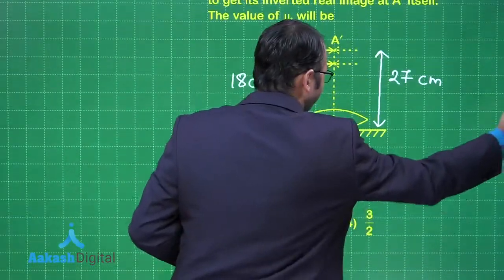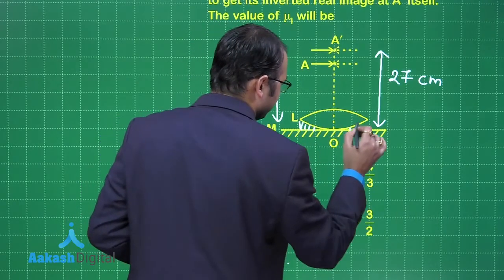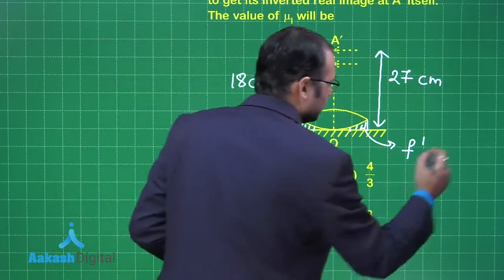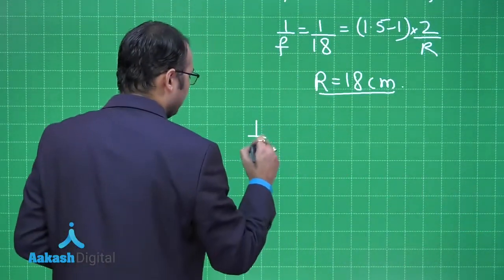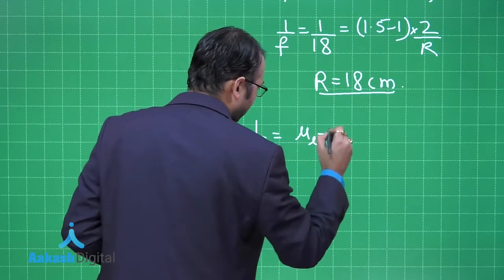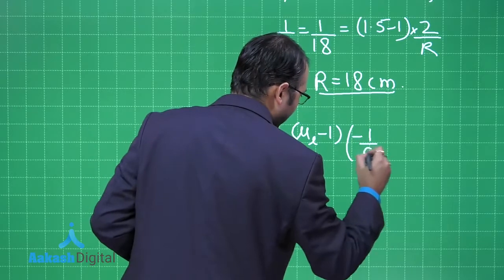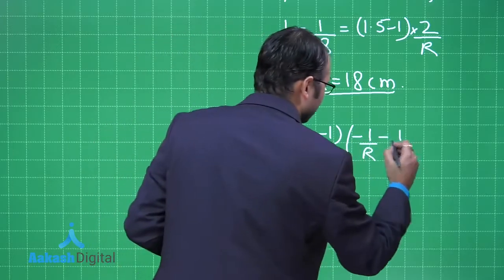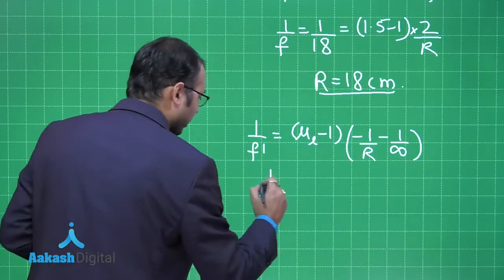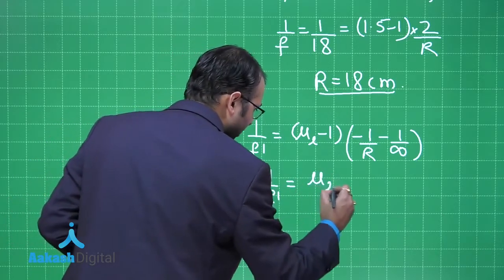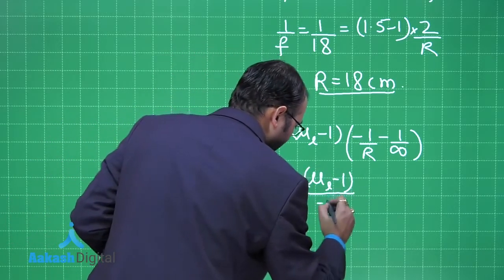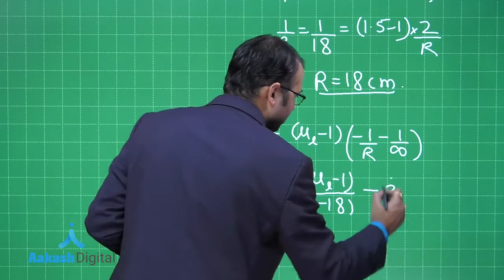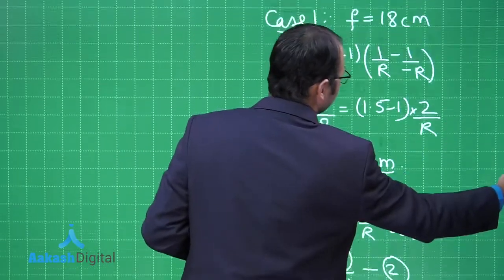In Case 2, the liquid placed between the lens and mirror behaves as a separate lens with focal length F dash. So 1/F dash = (μL−1)(−1/R − 1/∞), since the first surface has radius of curvature R and the second surface is flat. Therefore 1/F dash = (μL−1)(−1/18).